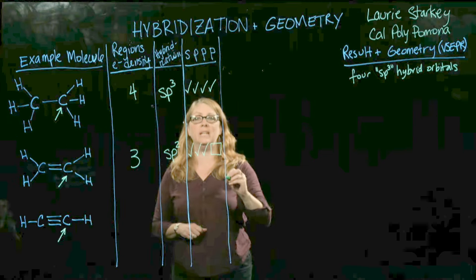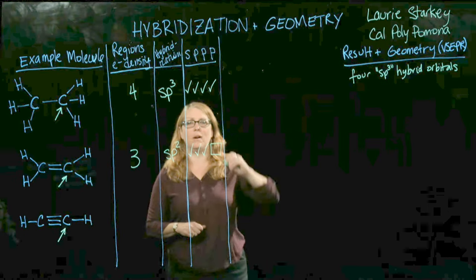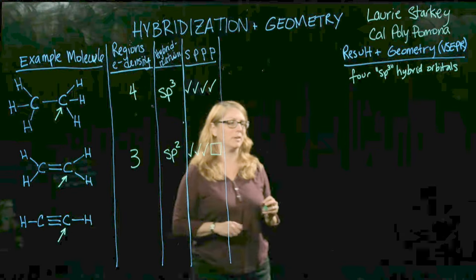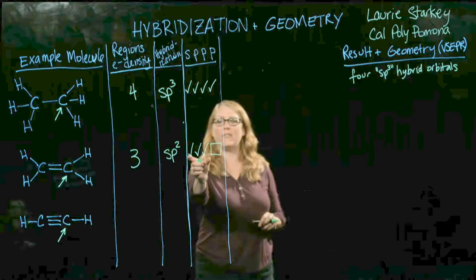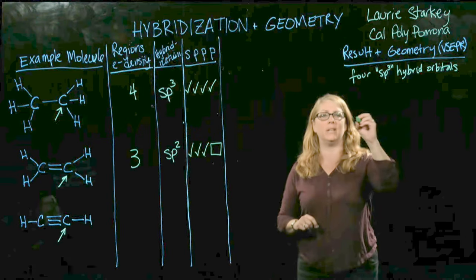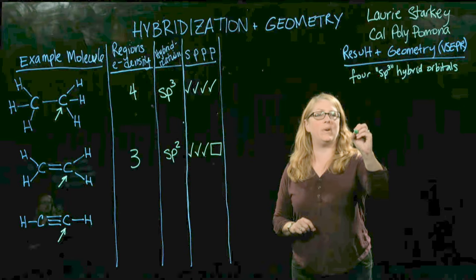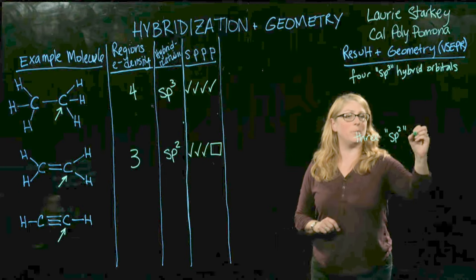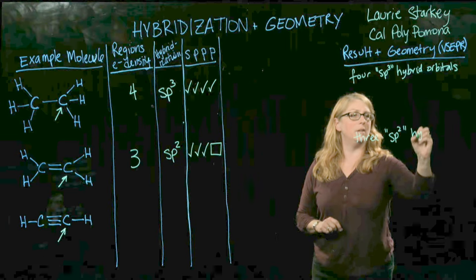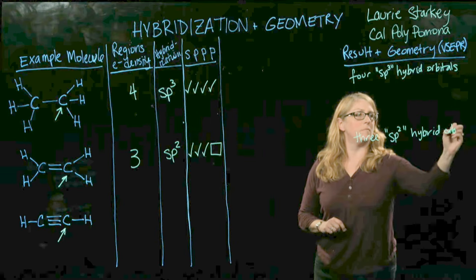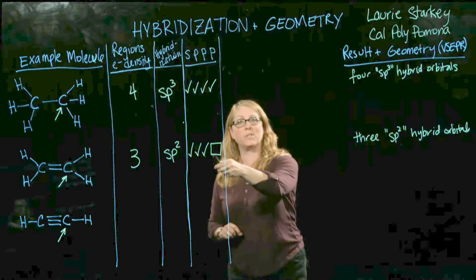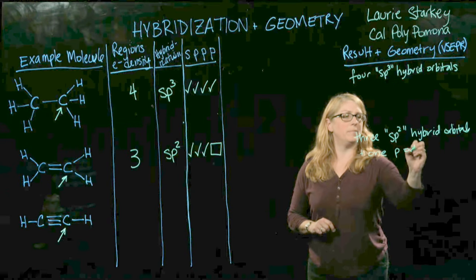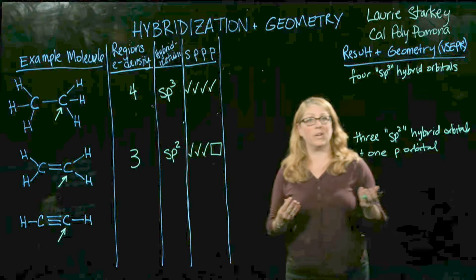That unhybridized p orbital is still going to look like a normal atomic p orbital with the dumbbell shape. The result now, if I mix these three atomic orbitals, I'm going to get three sp2 hybrid orbitals. What's left over, we also have one p orbital that is unhybridized and looks like an ordinary p orbital.